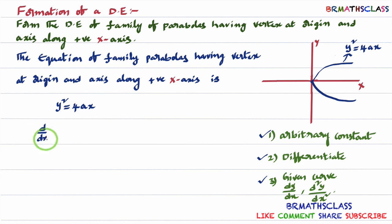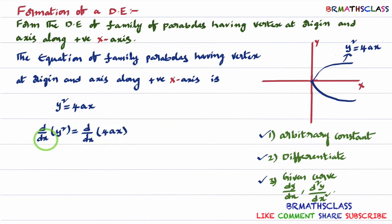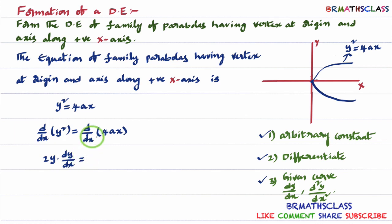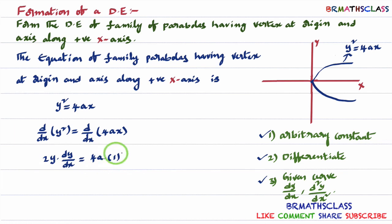Differentiate y² = 4ax with respect to x on both sides. The derivative of y² with respect to x: we know the derivative of y² is 2y, and since we are differentiating with respect to x, we apply chain rule and write dy/dx. On the right side, 4a is constant, so we get 2y·(dy/dx) = 4a·1 = 4a. Differentiation is complete, but 4a is not yet eliminated — we use the third step.